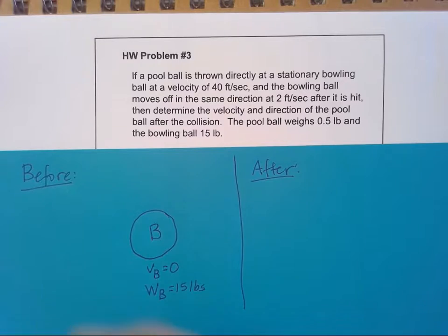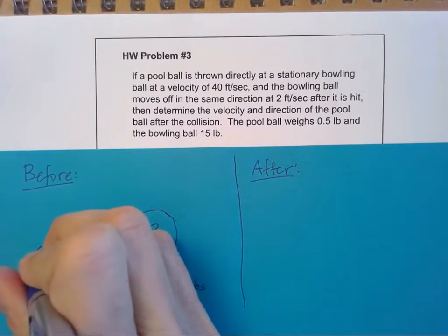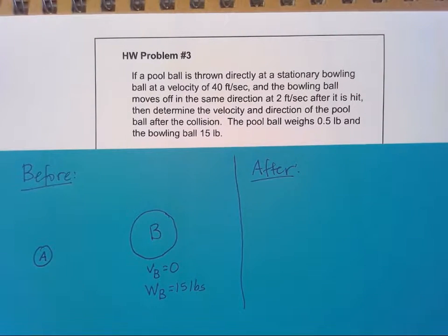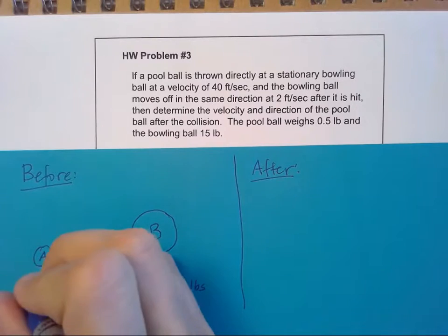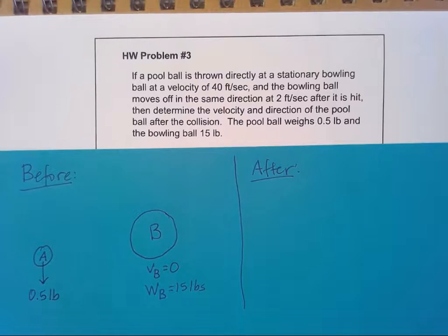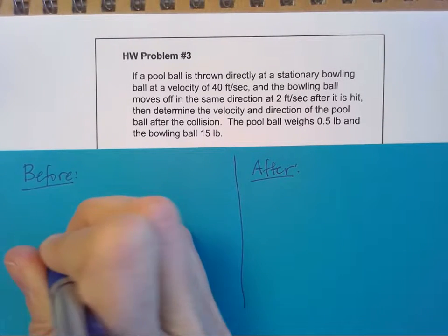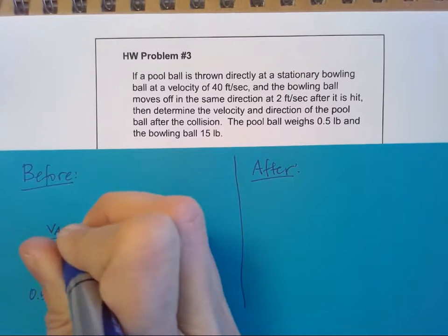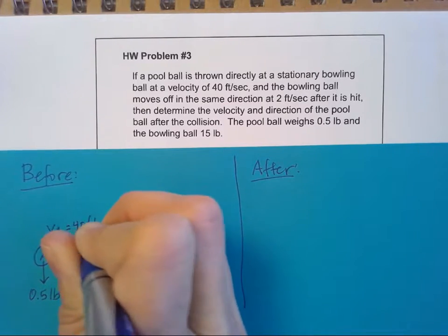And we're also told its weight is 15 pounds. So that's my before condition for my bowling ball. My pool ball, I'll make that a little smaller here, I'll call it A. It has a weight of half a pound of 0.5 pounds. And it's being thrown at a velocity, call that VA, of 40 feet per second.